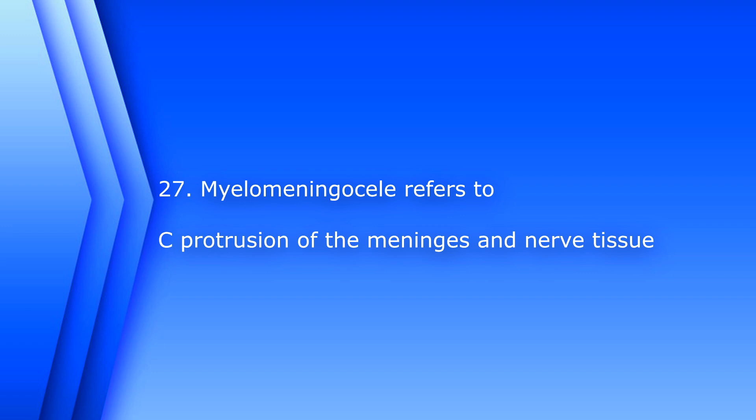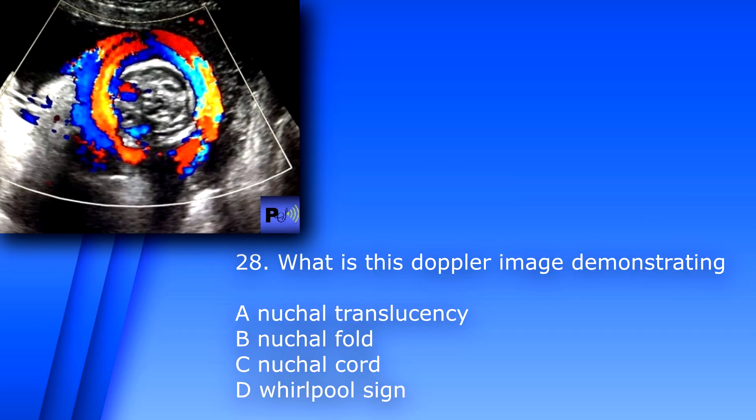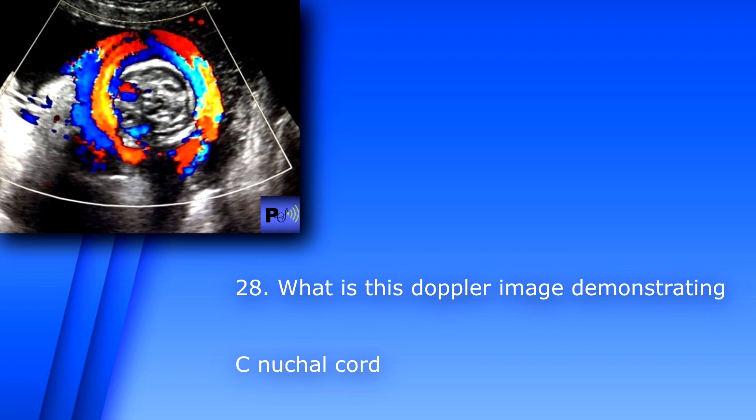Question 28: What is the Doppler image demonstrating? A) nuchal translucency, B) nuchal fold, C) nuchal cord, or D) whirlpool sign. The answer is C, nuchal cord. The nuchal fold is a posterior scalp measurement. The whirlpool sign can be seen with tortuous organs or midgut volvulus.